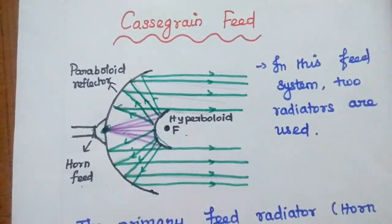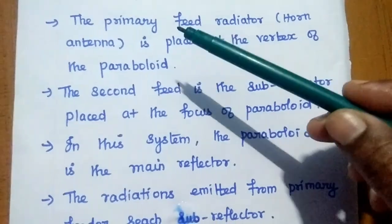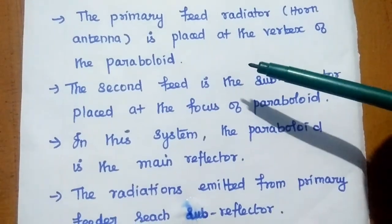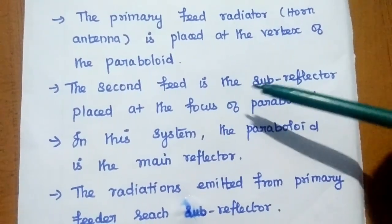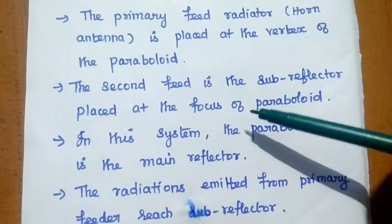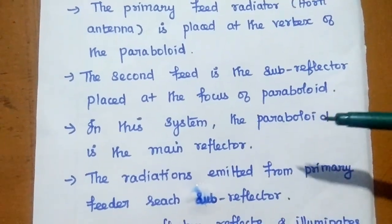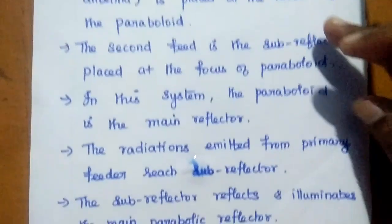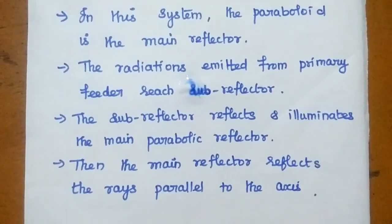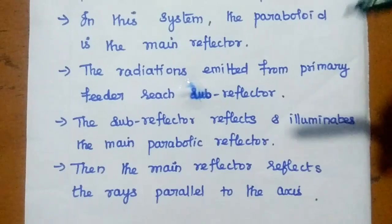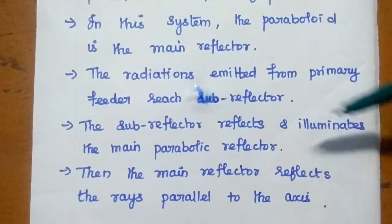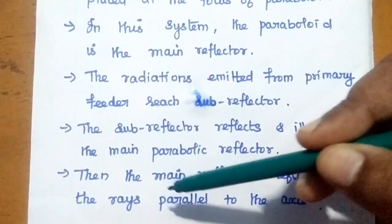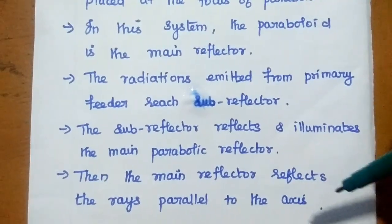There is no wire system used here. The primary feed radiator — the horn antenna — is placed at the vertex of the parabolic reflector. The secondary feed is the subreflector, placed at the focus of the parabolic reflector. The parabolic reflector is the main reflector and the hyperbolic reflector is the secondary reflector. The radiation from the primary feeder reaches the subreflector, which reflects and illuminates the main parabolic reflector, which then reflects the rays in parallel form along the axis.